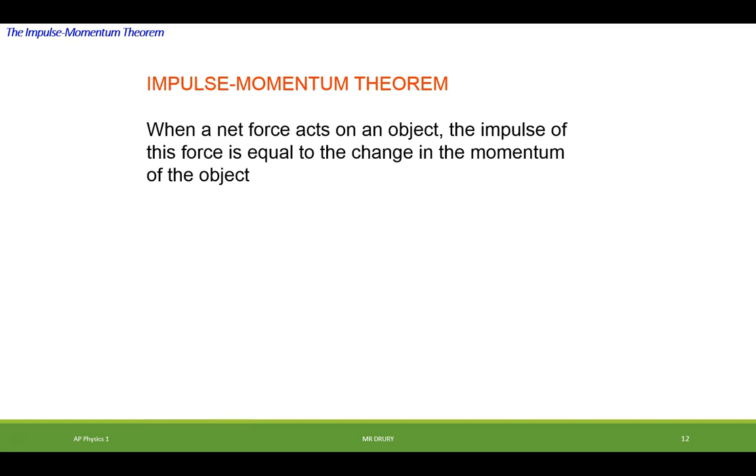When the net force acts on an object, the impulse of this force is equal to the change in momentum of the object. So here you have a net force acting over a time is equal to change in momentum of an object, some final momentum, minus whatever you started with. This is the impulse, obviously the final momentum, and the initial momentum.